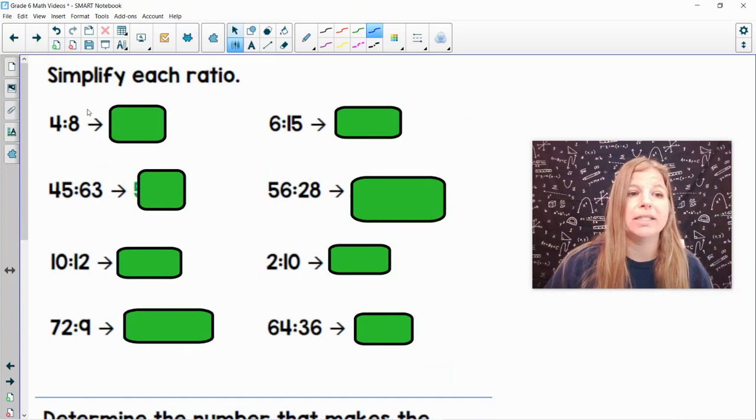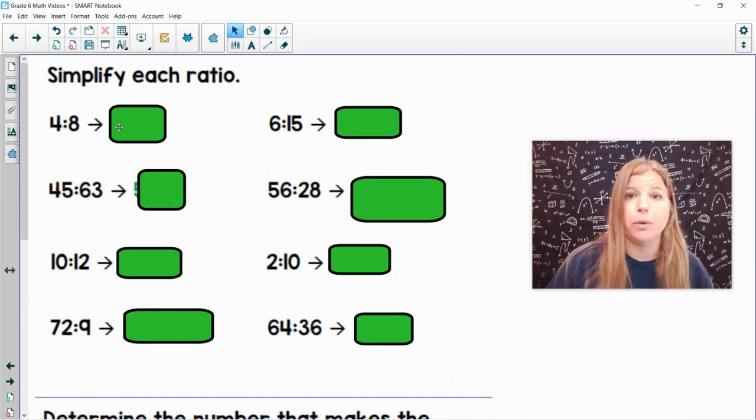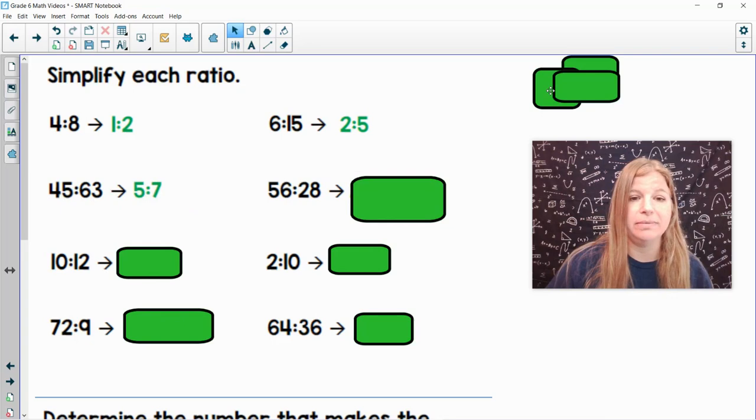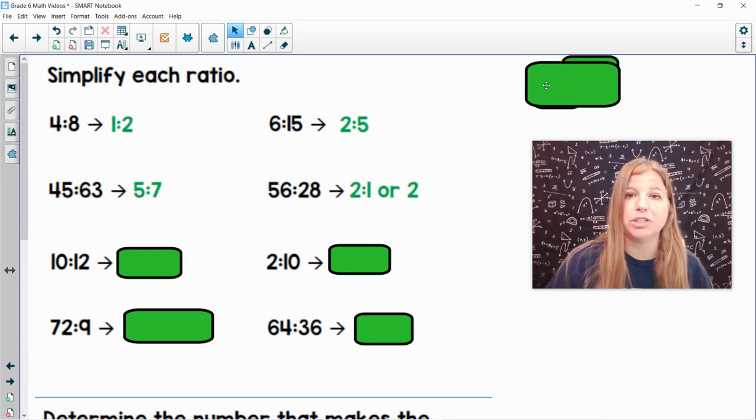If I wanted to do more practice, 4 to 8, and simplify that, I would divide both of them by 4 and I would get 1 half. 6 to 15, divide them both by 3, 2 to 5. 45 to 63, what goes into 45 that also goes into 63? 9. So if I divide them both by 9, I would get 5 to 7. 56 to 28, they're both divisible by 28. So that's actually 2 to 1, which is just 2.